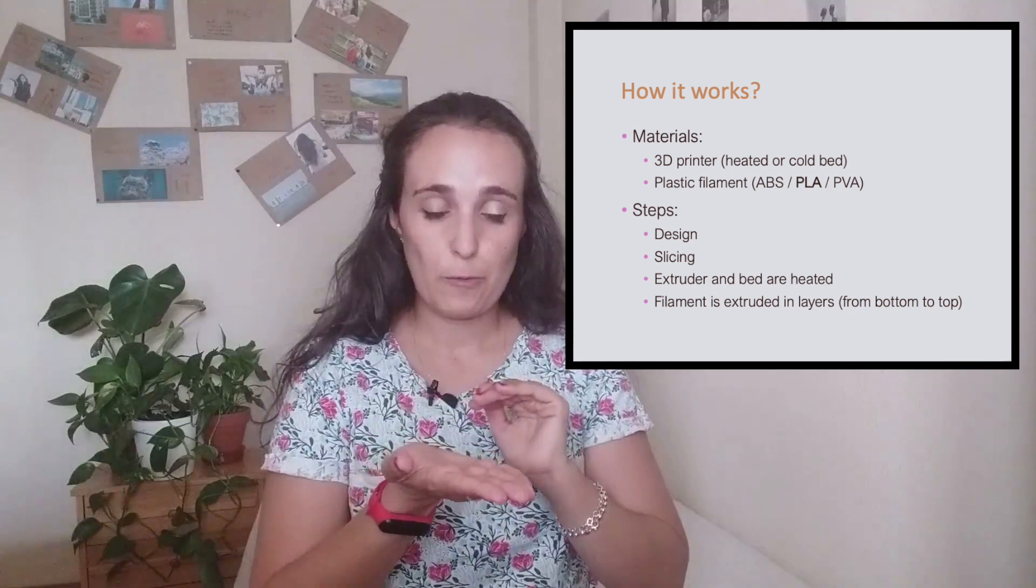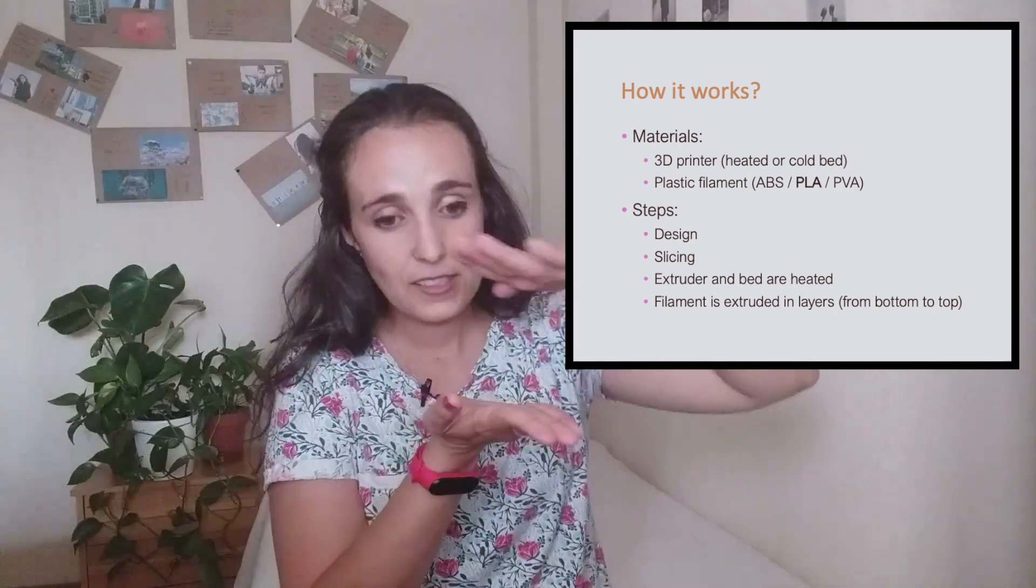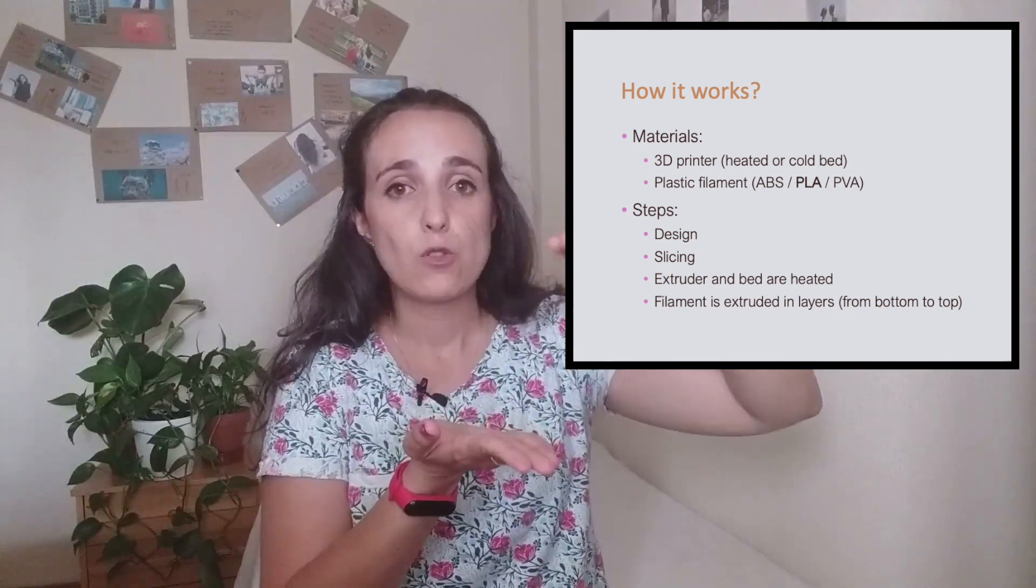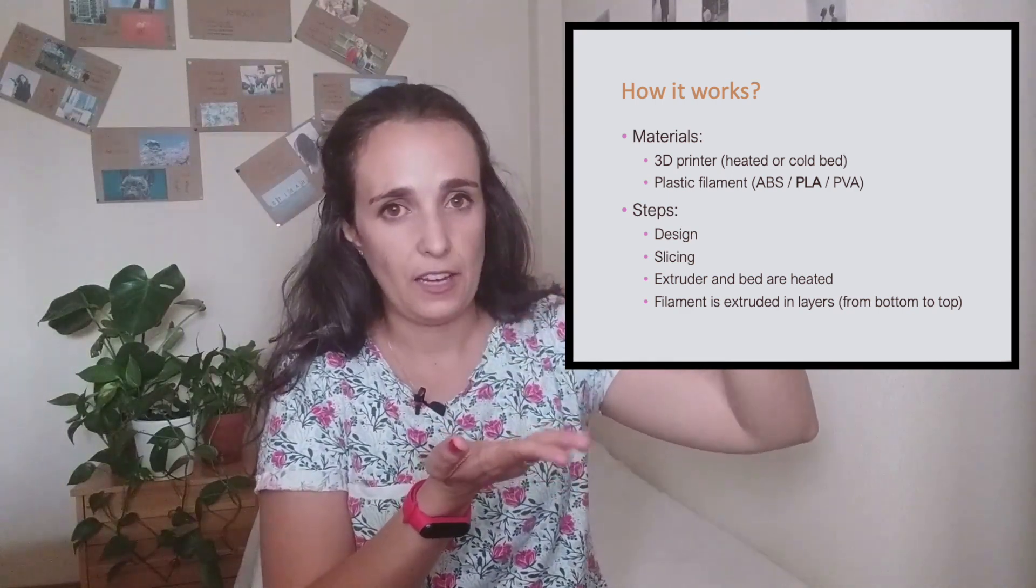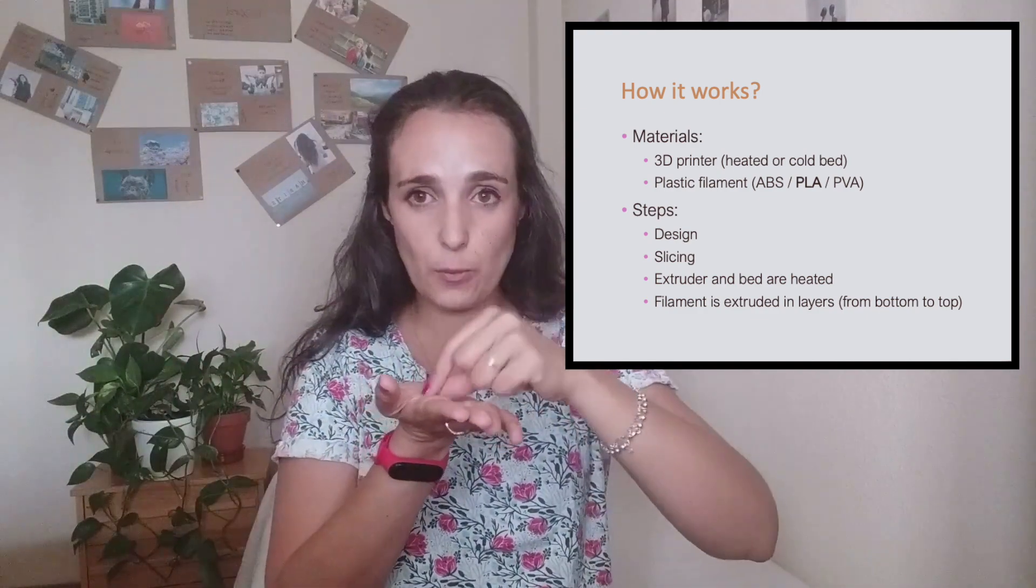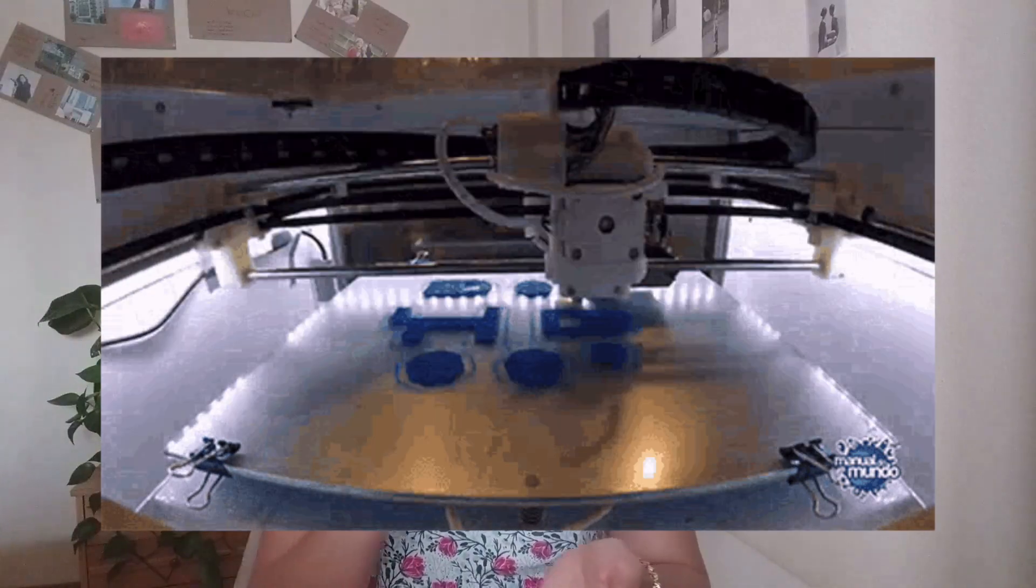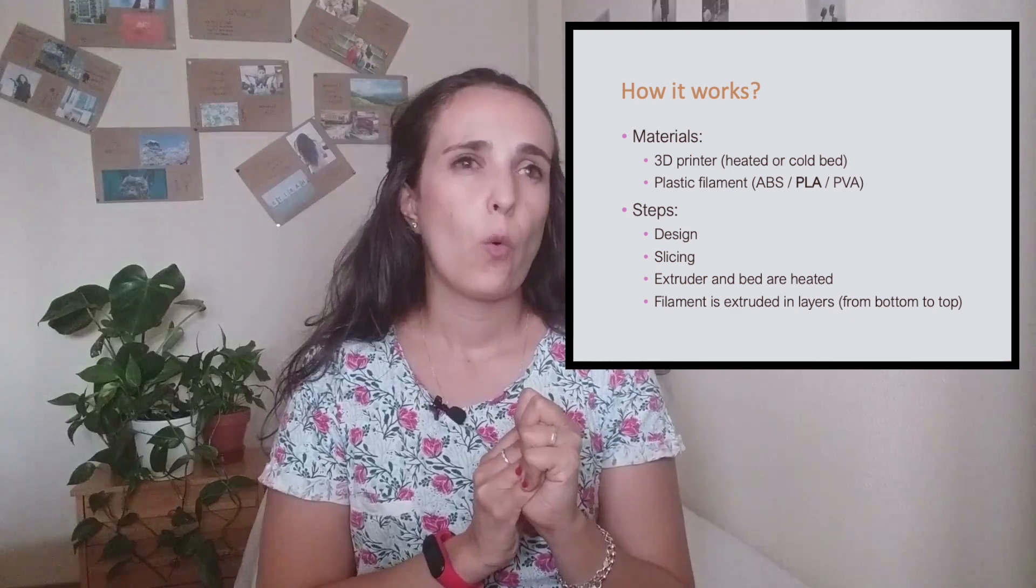So slicing in the 3D printing is the same. We are going to divide our design in layers, in slices, so the printer knows what to do in each layer. And of course we need an extruder, which is like the head. It's like in a normal printer, we have a head that distributes the ink on our paper. In this case, the head is called an extruder. And usually this extruder is really hot, like 100 or even 200 Celsius degrees.